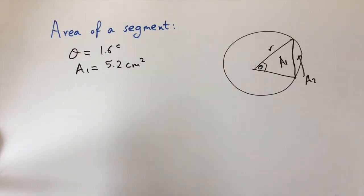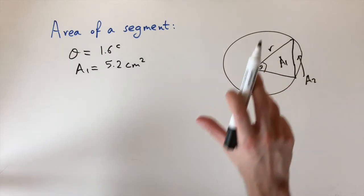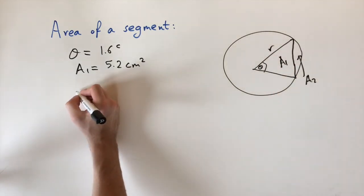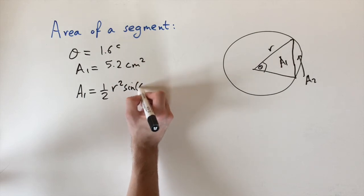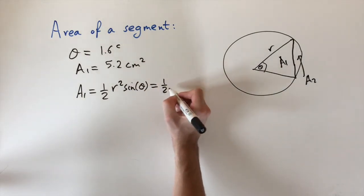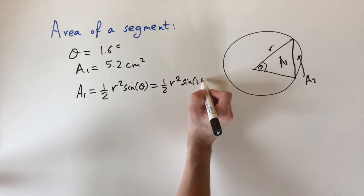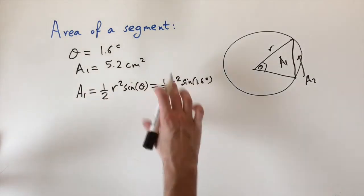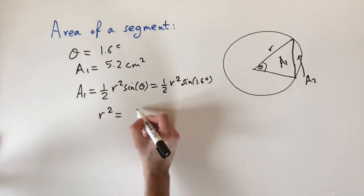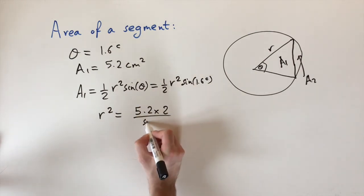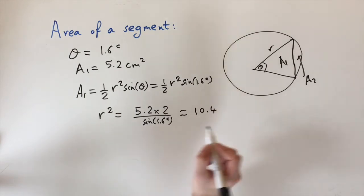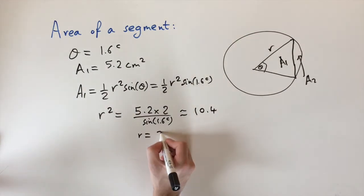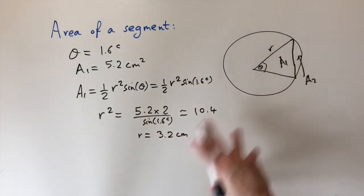Instead of using the combined formula, we'll think in terms of areas of triangles and sectors. To find A2 we first need the radius. Using the triangle area formula: A1 = (1/2) r² sin(θ), with θ = 1.6 radians and A1 = 5.2, we rearrange to get r² = 5.2 × 2 / sin(1.6) ≈ 10.4. Taking the square root gives a radius of about 3.2 centimeters.